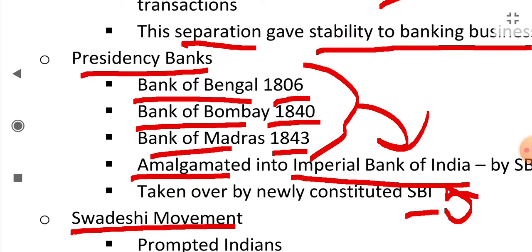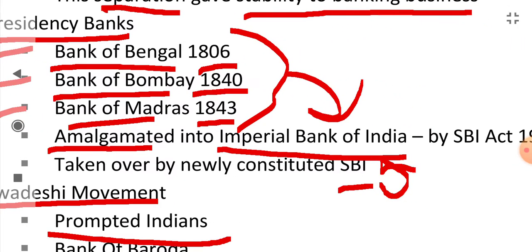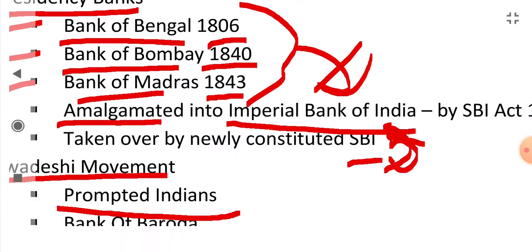The presidency banks were established as follows: Bank of Bengal, Bank of Bombay, and Bank of Madras. They were amalgamated into the Imperial Bank of India, which was taken over by SBI, the State Bank of India.